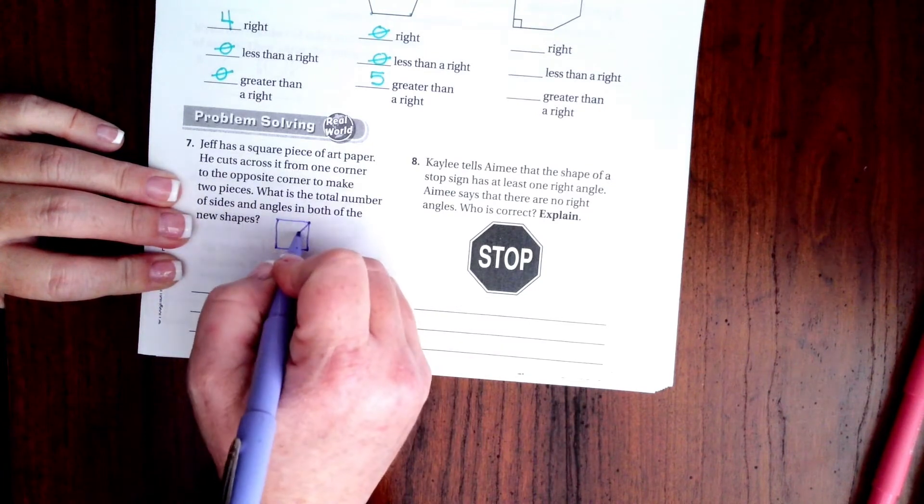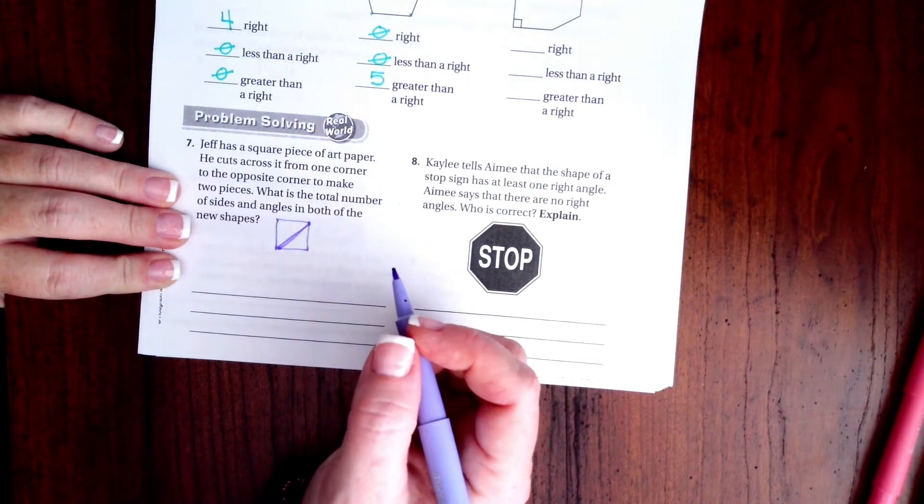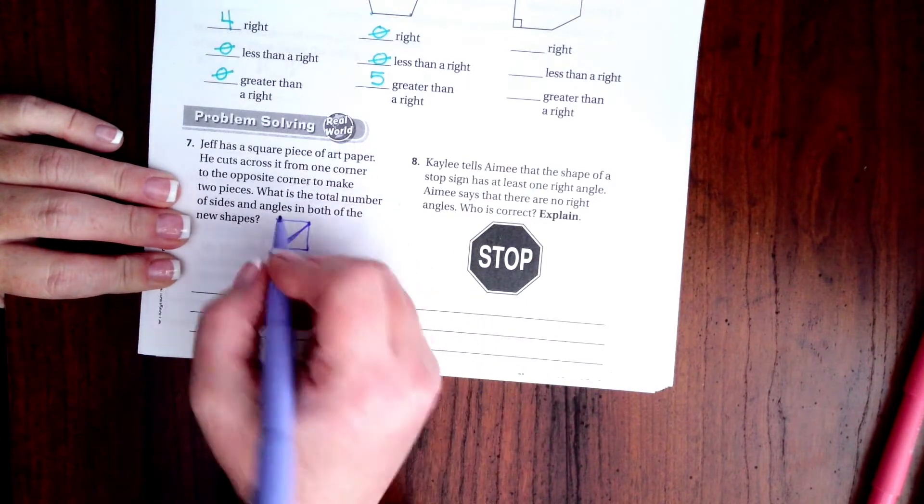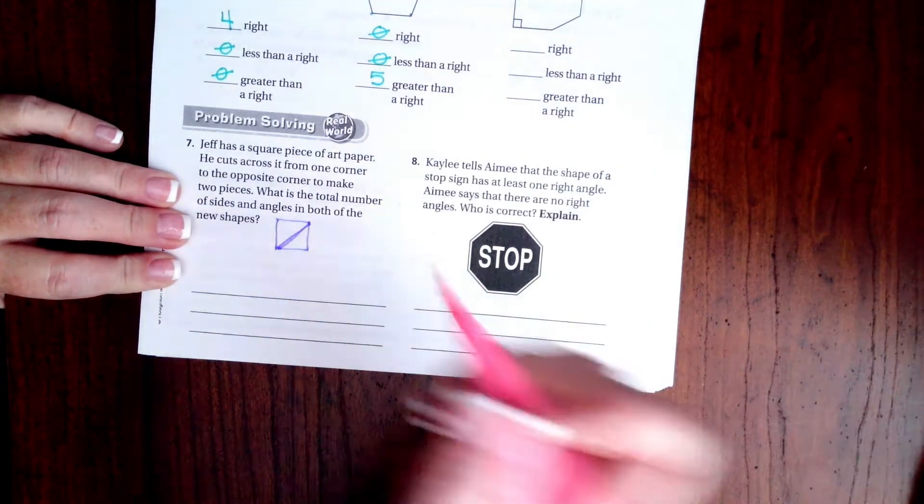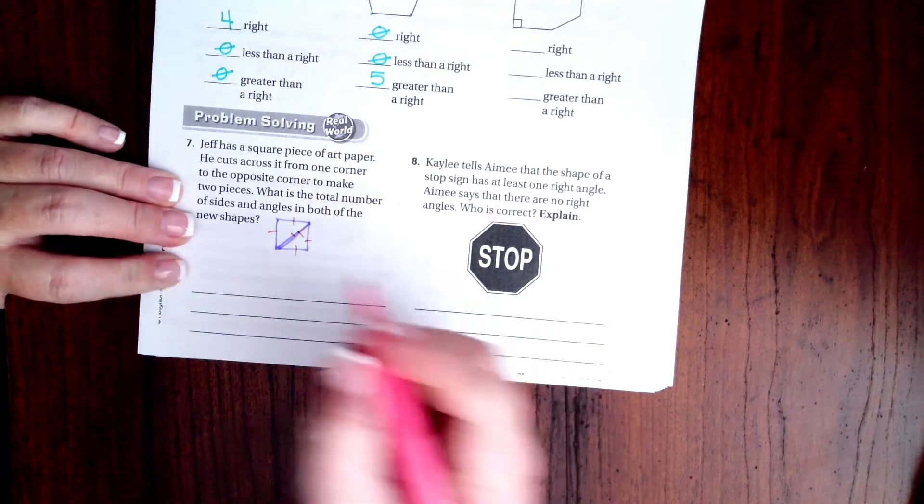So he has a square piece of paper, he cuts it into half. So now he has one, two, three, four, five, six sides.